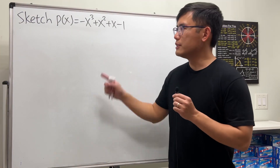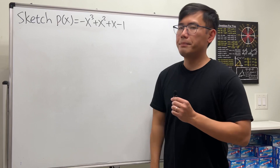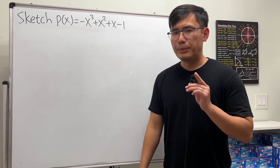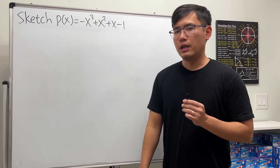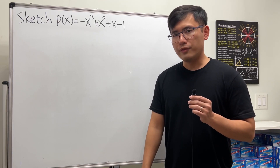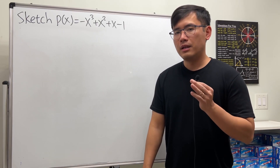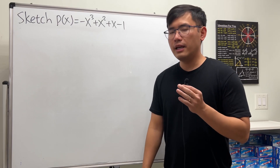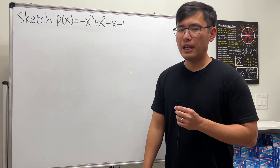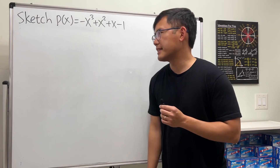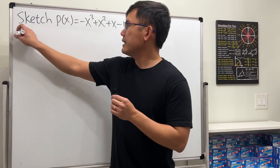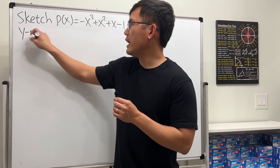Let me show you how to sketch this cubic polynomial the precalculus way. We will find the y-intercept, the x-intercept, the sign chart, and then also the end behavior. So let's get started.